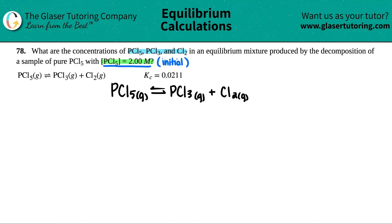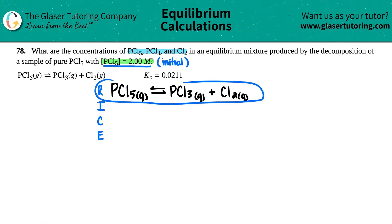Once you identify that this is a start value and you're in the equilibrium chapter, you go straight to an ICE table. Some teachers use a RICE table where R stands for the balanced reaction, but fewer letters is better — I just use ICE.